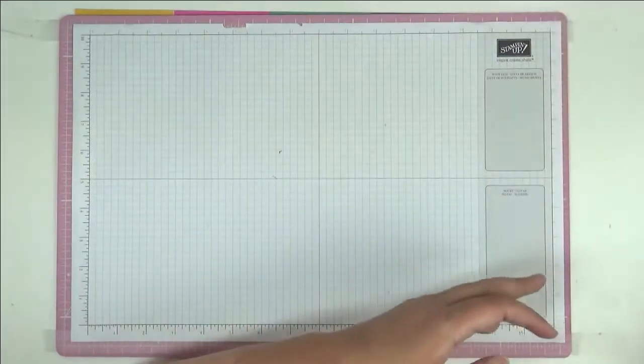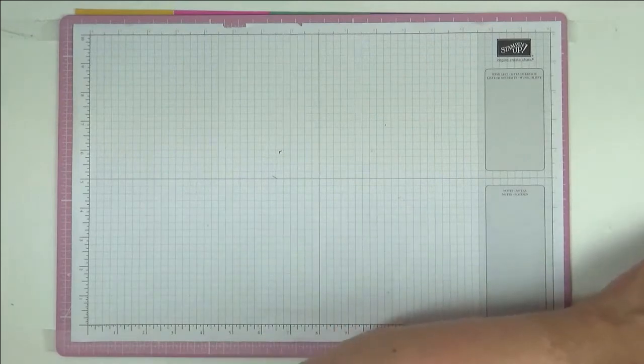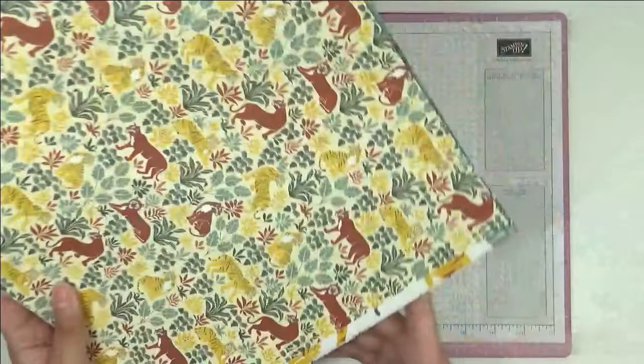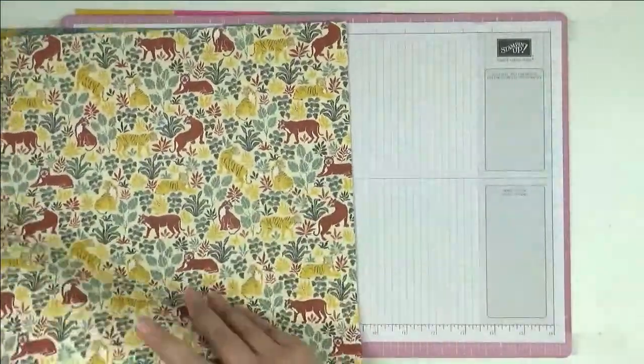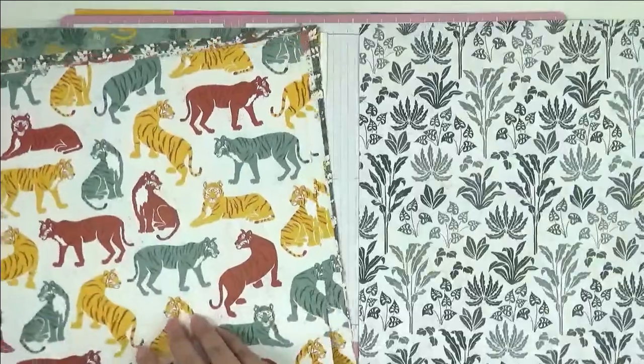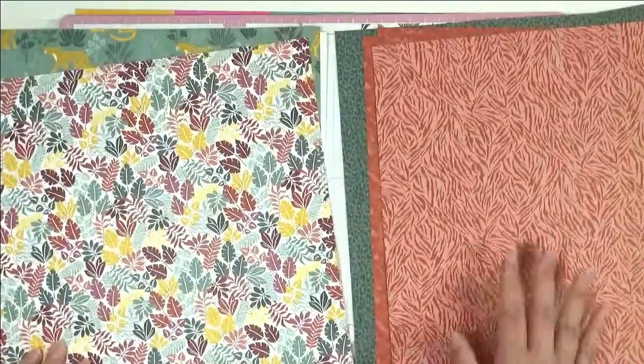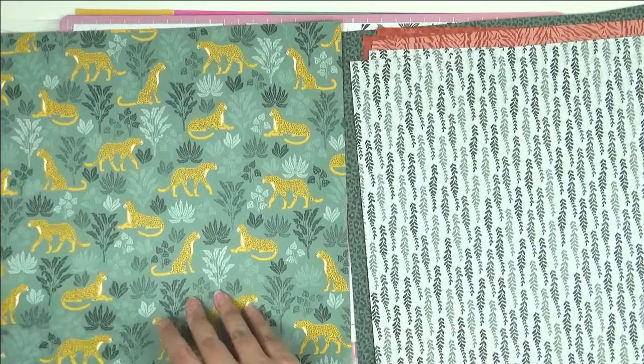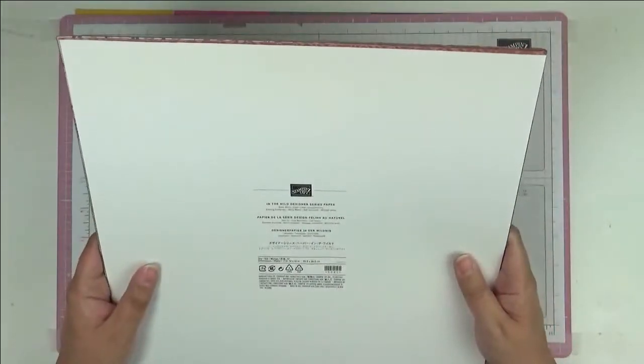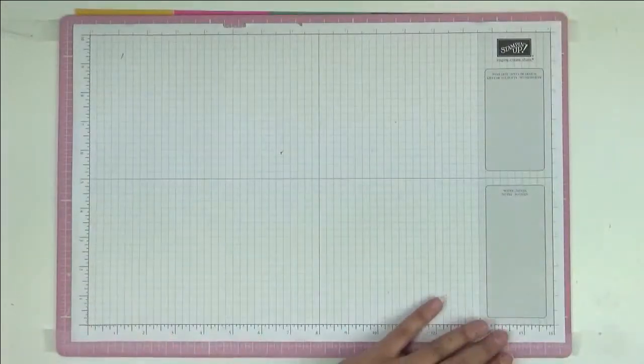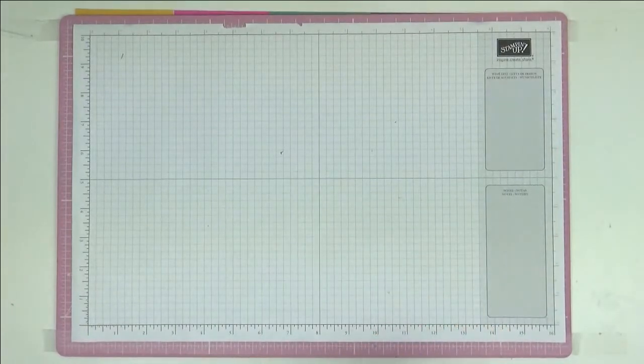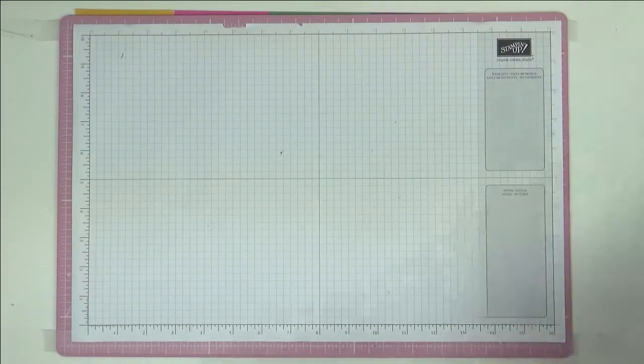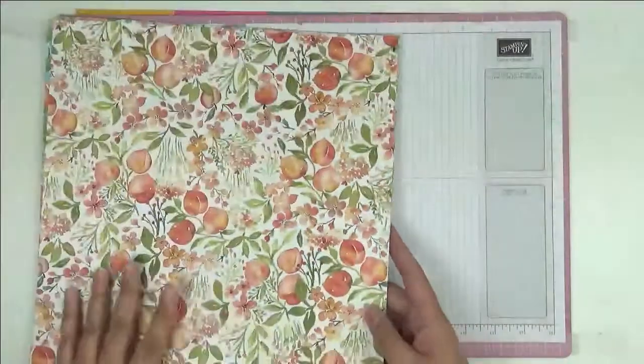Last but not least is our 12 by 12 stacks of paper. Let me bring this first stack in. This one is called In the Wild. We're going to go through this uber quickly. I love this. The colors are basic black, cajun craze, crushed curry, evening evergreen, merry merlot, soft succulent, and whisper white. This one is the Peach, and if you saw my first video, you may have seen me showing you the Peach dies and stamps. This is what they coordinate with. You've got those glorious peaches here.